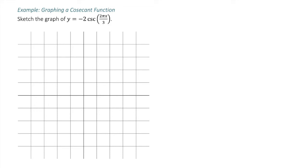Sketch the graph of y equals negative 2 cosecant of 2 pi x over 3. We'll start this by simply graphing the graph of the corresponding sine function.